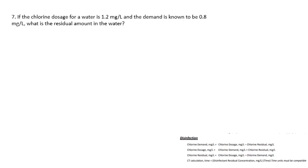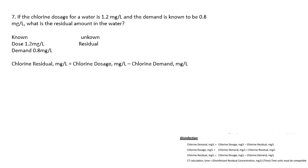Question number seven: if the chlorine dosage for a water is 1.2 mg/L and the demand is known to be 0.8 mg/L, what is the residual amount in the water? You know your dose was 1.2 mg/L and your demand was 0.8 mg/L; you're looking for the residual. Using the residual formula — chlorine dosage minus chlorine demand — 1.2 minus 0.8 gives a chlorine residual of 0.4 mg/L.